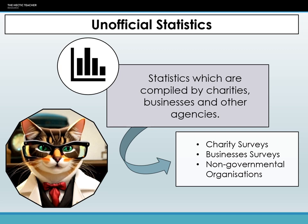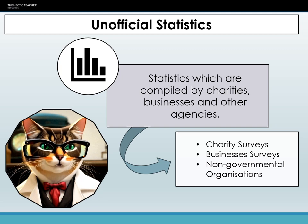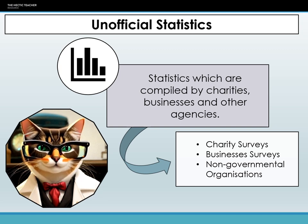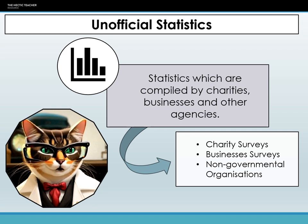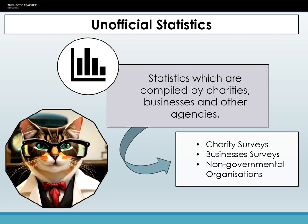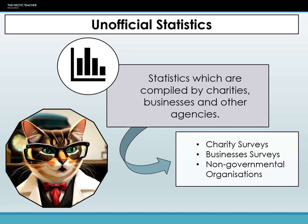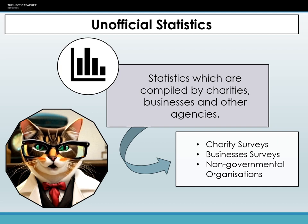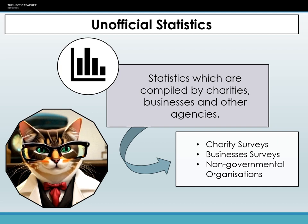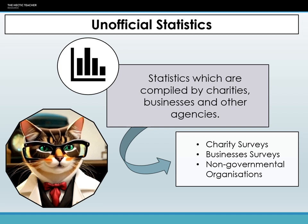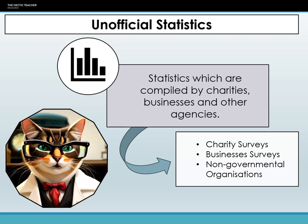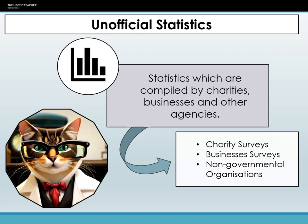However, this flexibility and informality can also be a double-edged sword. Without the standardized methodologies that official data sources employ, the reliability and consistency of unofficial statistics can be suspect. Imagine two different NGOs conducting surveys on the same topic but coming up with varying results due to differences in their sample selection or survey questions. This can make it difficult to establish a universally accepted figure or perspective on a particular issue. Additionally, unofficial statistics can sometimes have a limited scope, focusing on smaller sample sizes or specific demographics. While this might offer detailed insights, it poses challenges when trying to generalize these findings to a broader population.